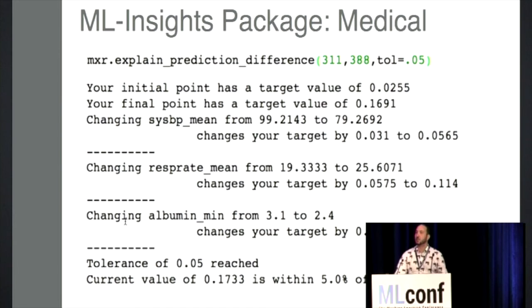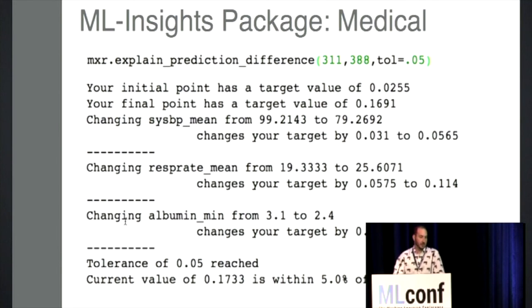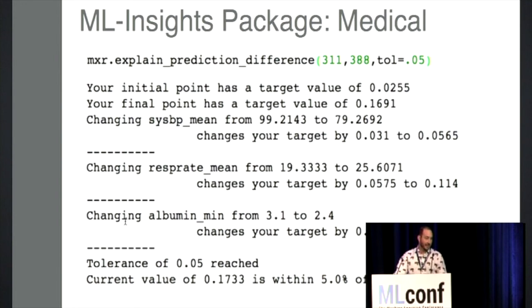To explain individual predictions: I picked two patients — one with a model-predicted 2% mortality risk and another with 16.9%. The reasons the model identified for the difference: the second patient has lower blood pressure, is breathing faster, and has a bad albumin value.